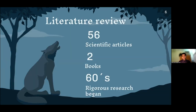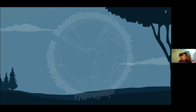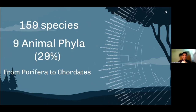Initially, we conducted a bibliographic research to create a database with species of living beings that have some relationship with the moon. We reviewed about 56 scientific articles and parts of two books. With this information, we created a phylogenetic tree that shows the relationship of all these living beings. In total, we found 159 species of animals that have some kind of relationship with the moon, in nine different phylogenetic groups ranging from sponges to vertebrates.